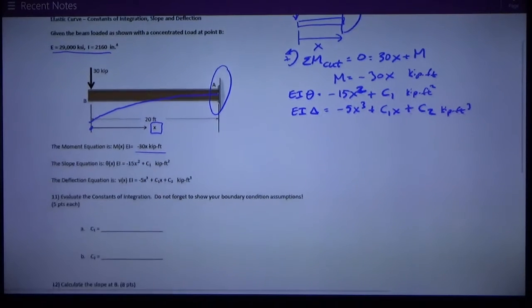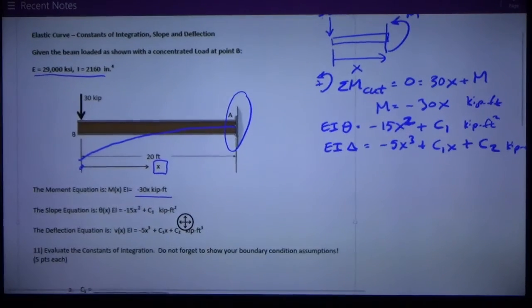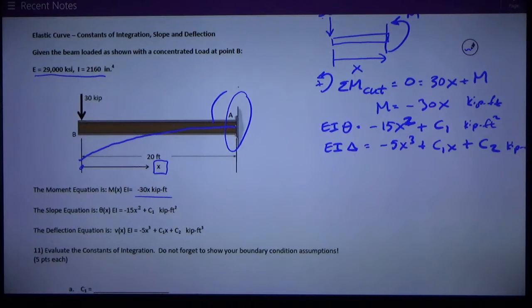Okay, so the first problem, number 11, asks us to calculate the constant, evaluate the constants of integration. So it says, do not forget to show your boundary condition assumptions. We have to use boundary conditions, or continuity. We have no continuity equations, conditions, because we only have one equation, so we can't have a continuity condition. All we have is boundary conditions. So, what do we know? We know, looking at the deflected beam up here, that at point A, the slope is zero, and the deflection is zero. We don't know anything about what's going on out here at point B. It's sloping and deflecting, and we need to figure out what it is.